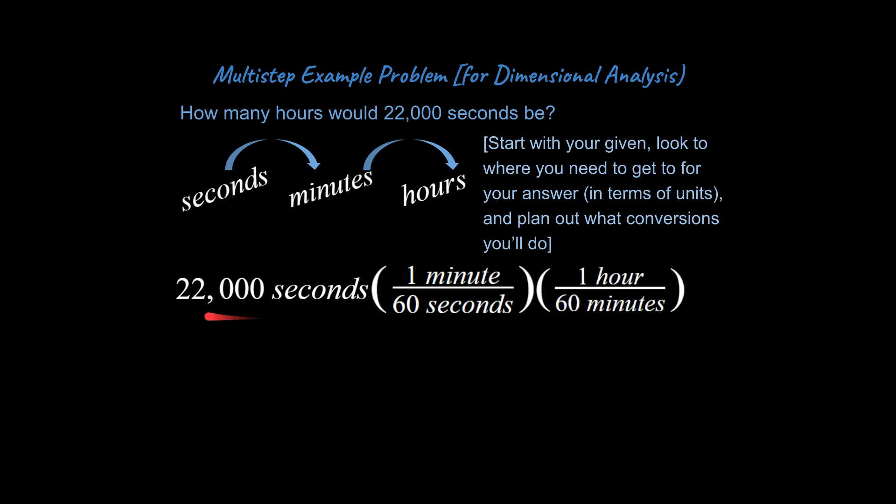And so all I'm doing is taking this amount of time, multiplying it by a fraction that's equal to one times another fraction that's equal to one. I'm going to cancel out the units. And I end up with 6.1 hours.